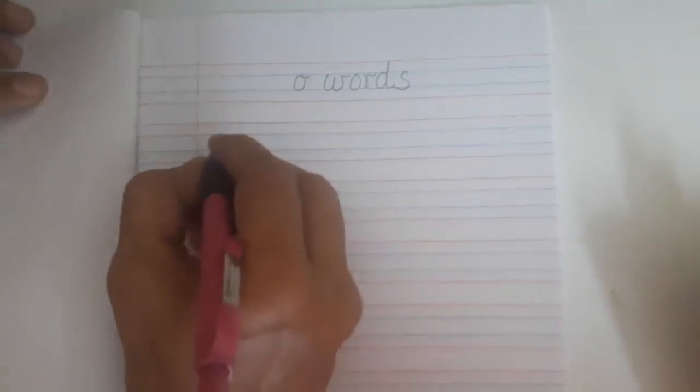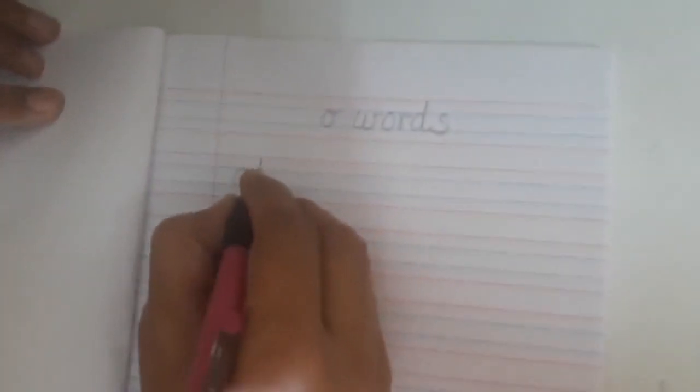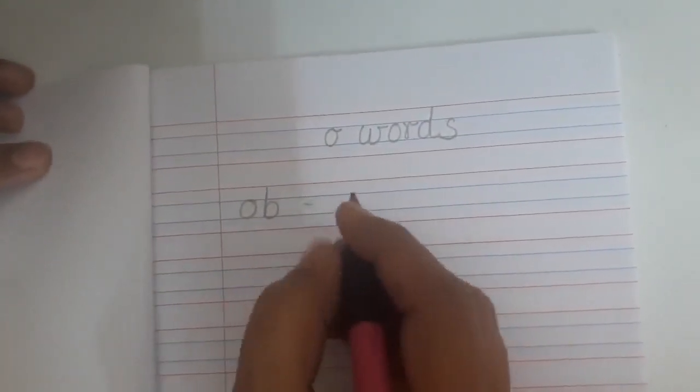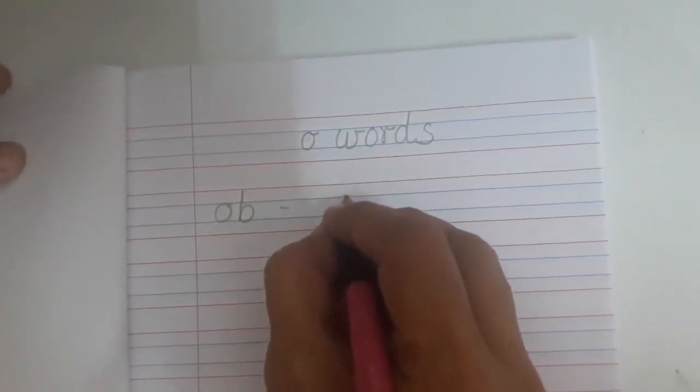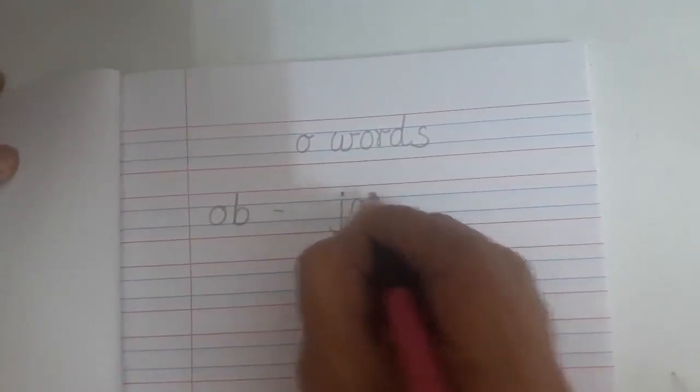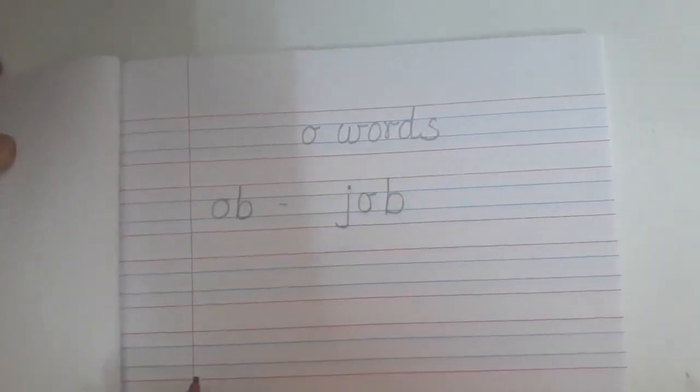Now we have learnt OB words, right? So O, OB, OB words. And we are going to write word with OB words. So JOB, JOB, JOB, right?